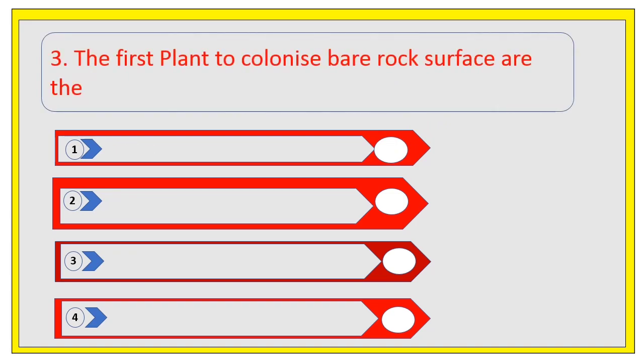The first plants to colonize bare rock surface are. Options are lichens, hollum, shrubs, and bushes. The right answer is lichens.